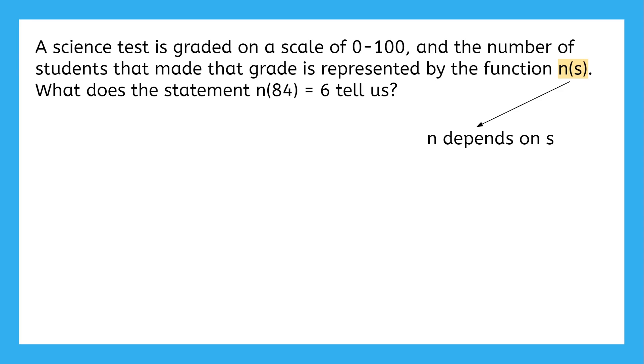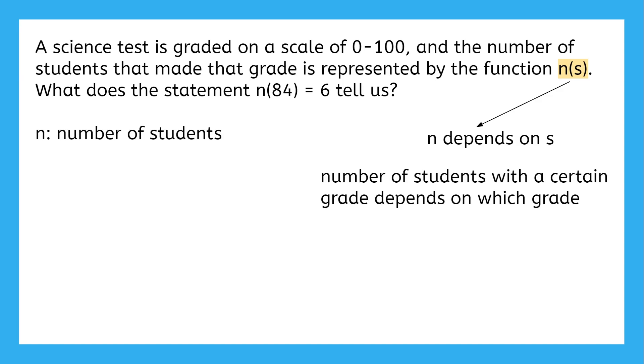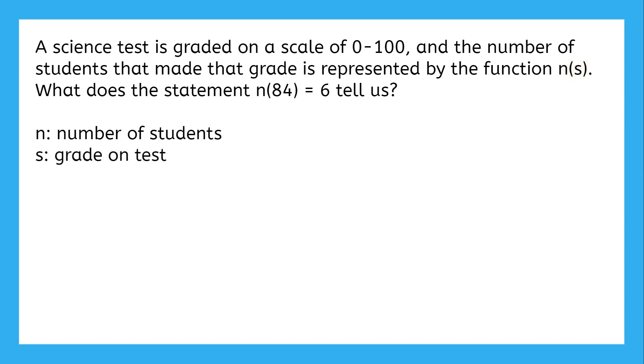If we wanted to count how many students made a certain grade, we'd have to decide what grade to look for first. In other words, the number of students who made a certain grade depends on which grade we chose to look at. Counting the number of students that made 100 is different from counting the amount that made a 70. So the dependent variable n is the number of students, and the independent variable s is the grade those students made on the test.